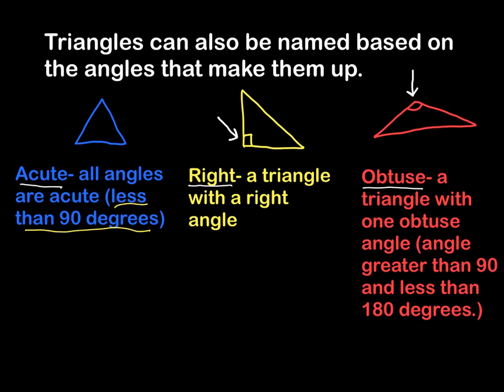And finally, we have the obtuse triangle. An obtuse triangle is a triangle with one obtuse angle. So again, if you're not familiar, we have an obtuse angle is an angle that is greater than 90, but it's also less than 180, which is a straight line. So if it has one obtuse angle, it is then called an obtuse triangle.